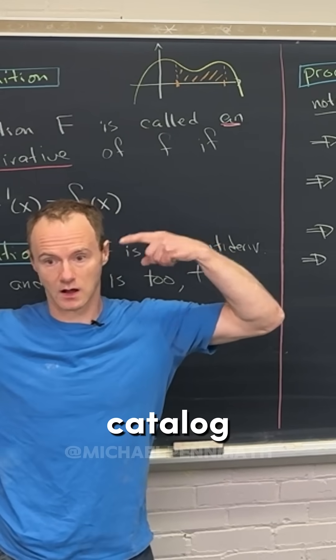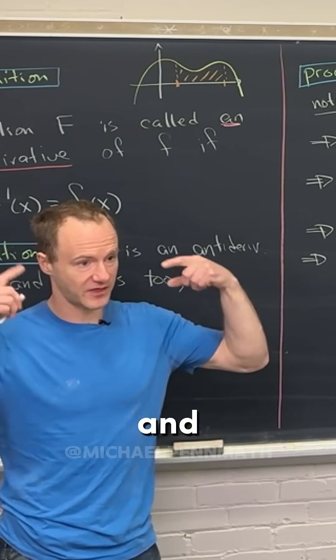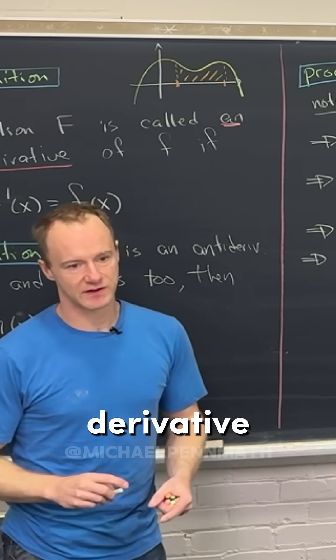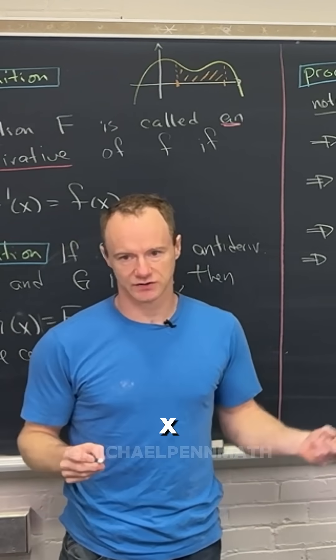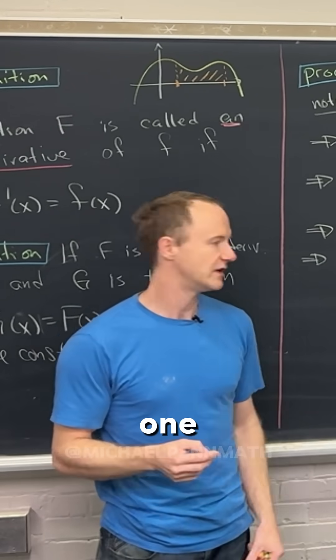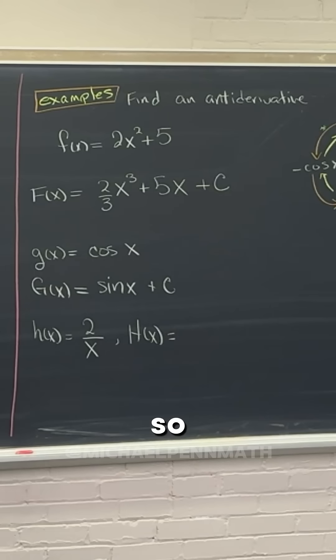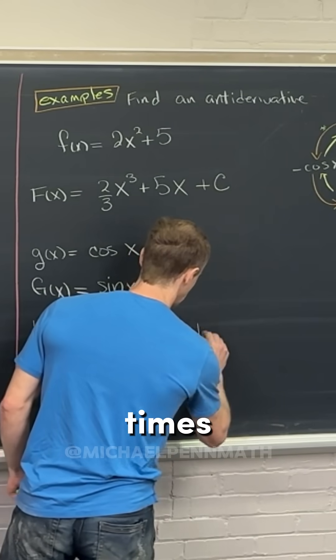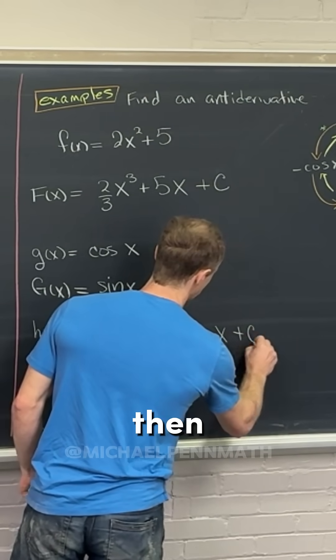So we have to go through the catalog of functions in our brain and think what function has the derivative of - well, we really just need 1 over x. Because the 2 is just a constant multiplier. So whose derivative is 1 over x? Yeah, the natural log of x. So this is 2 times the natural log of x plus a constant.